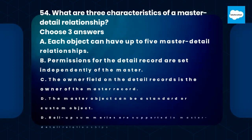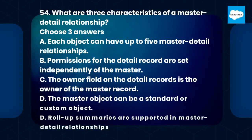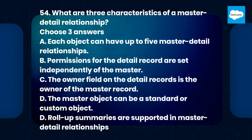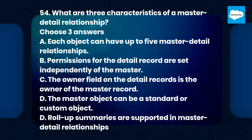Question 54: What are three characteristics of a master-detail relationship? Choose three answers. A. Each object can have up to five master-detail relationships. B. Permissions for the detail record are set independently of the master. C. The owner field on the detail records is the owner of the master record. D. The master object can be a standard or custom object. E. Roll-up summaries are supported in master-detail relationships.